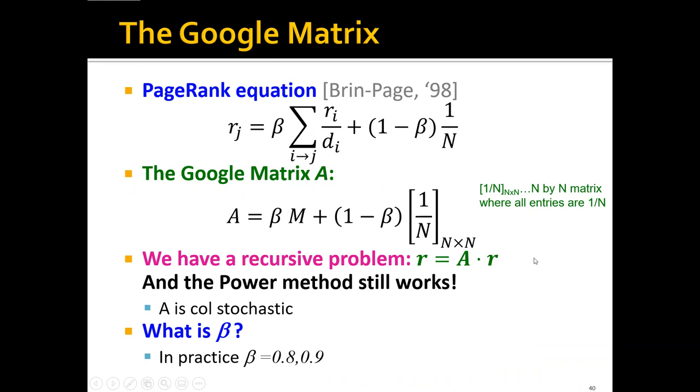And in this way the power method still works. Why? This is because this final stochastic matrix A is still column stochastic.